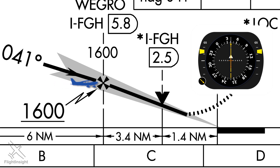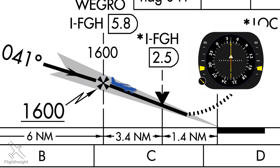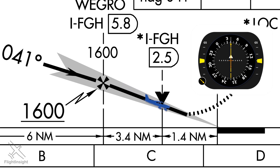Many HSIs also have a glide slope indicator for use with precision-type approaches, and can also be paired with GPS course in addition to VOR, as shown here. But this is the very basics of HSI functionality. With just a bit of practice, you can take advantage of how much more situational awareness you get from it.